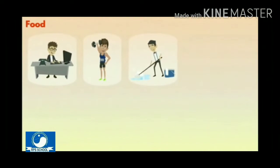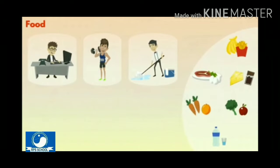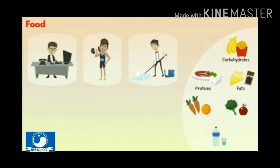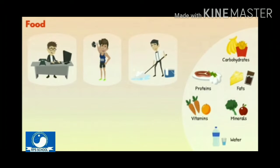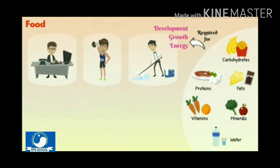Students, we need energy to carry out different activities. We also need different materials for growth and development of our body. For example, carbohydrates, proteins, fats, vitamins, minerals and water. The materials required for energy, growth and development are called nutrients.